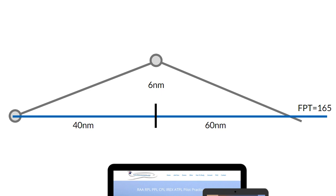Hi, it's Matt here from Pilot Practice Exams. Let's take a look at the 1 in 60 rule — a rule that is going to let you get back on track after you've flown off track.